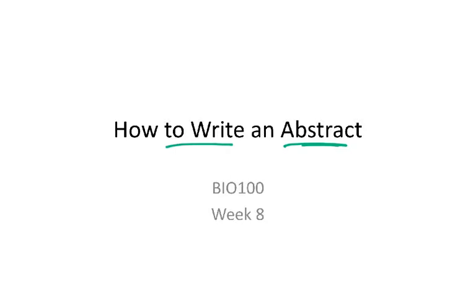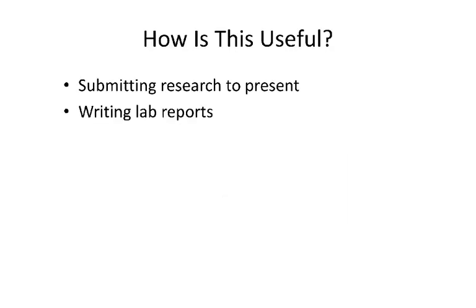If they're only going to read one thing, they're probably going to read the abstract, so it's important for us to know how to write those abstracts. As a student, if you are doing research in a lab and you want to present your research, you need to submit an abstract to either one of the on-campus Sac State symposiums to present a poster or a talk, or if you're presenting off-campus, you'll need to submit and write an abstract that summarizes your results and research. Knowing how to write an abstract is going to be useful for your career here at Sac State.